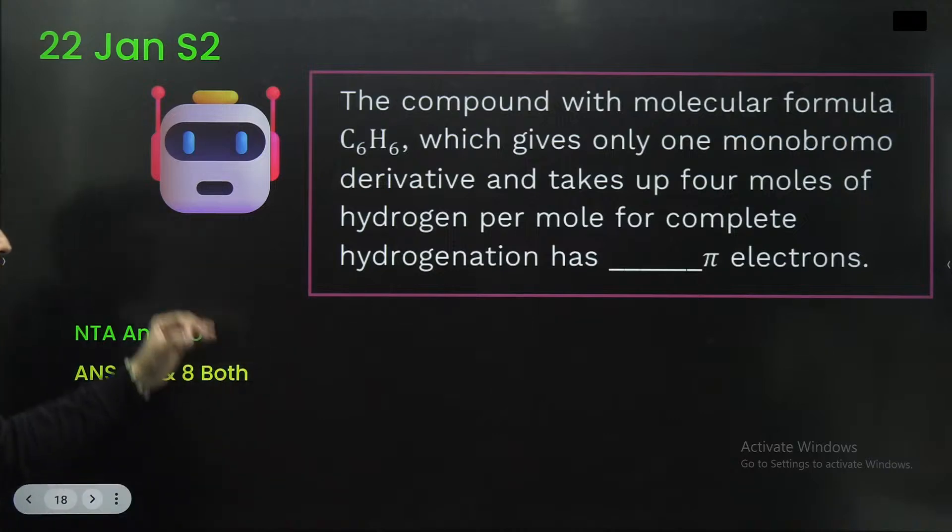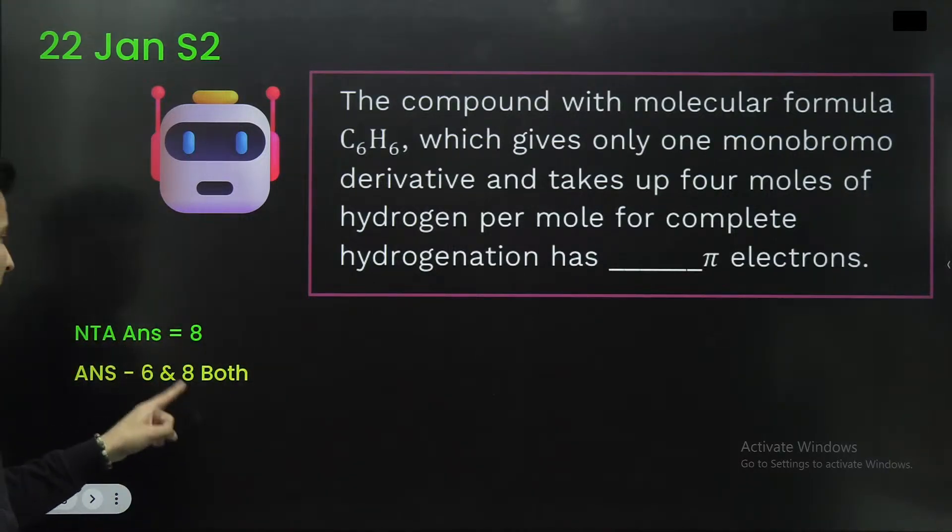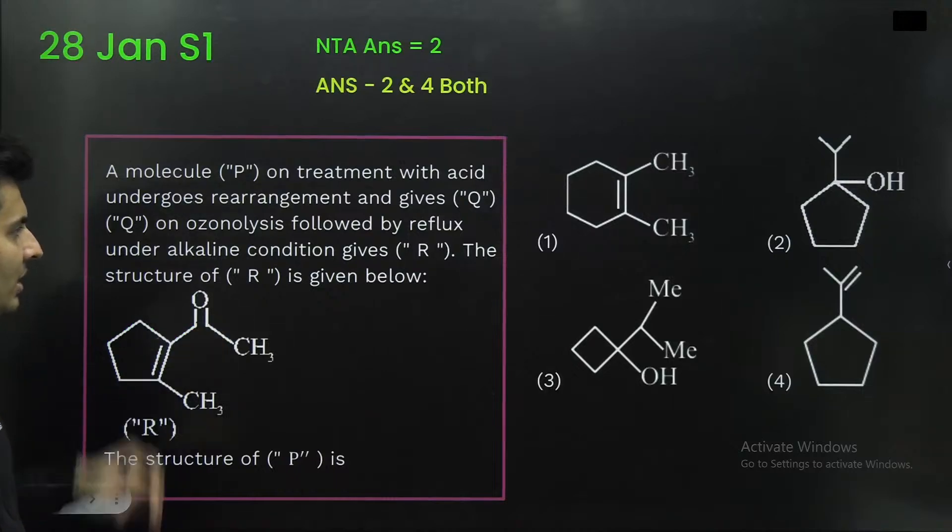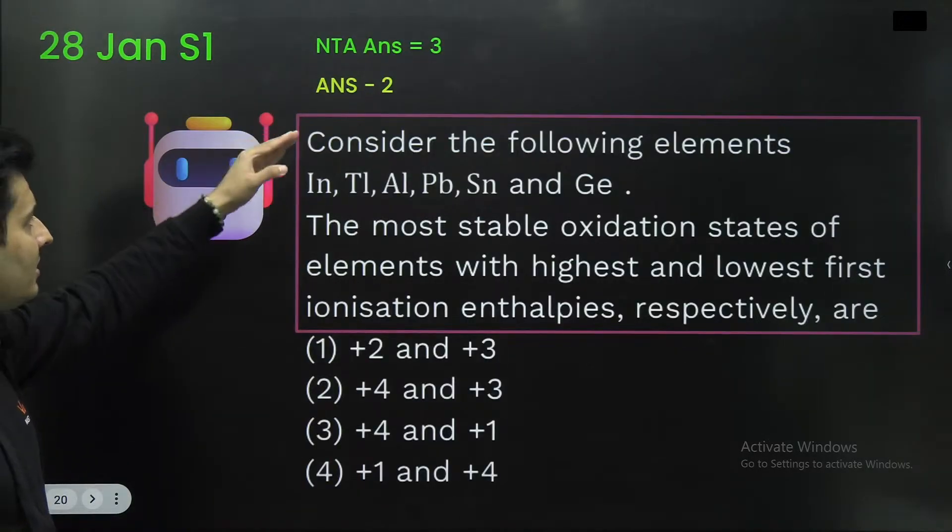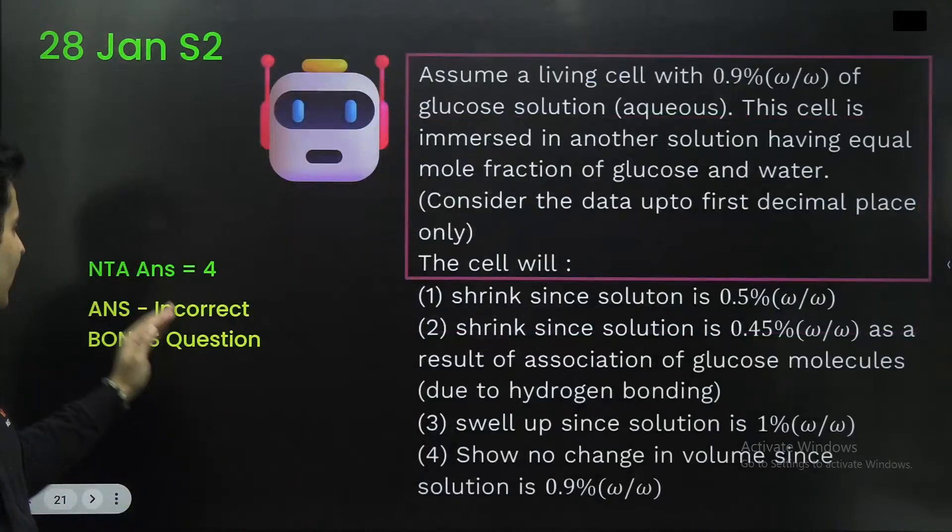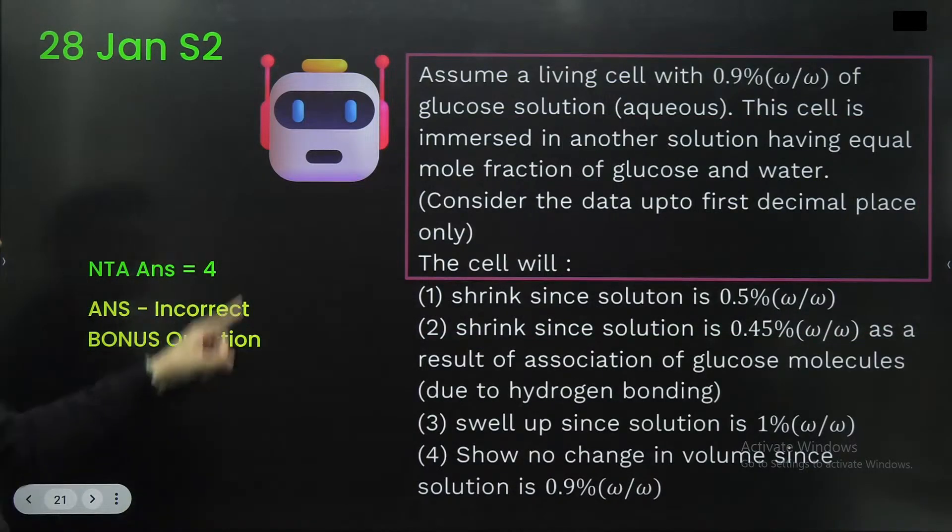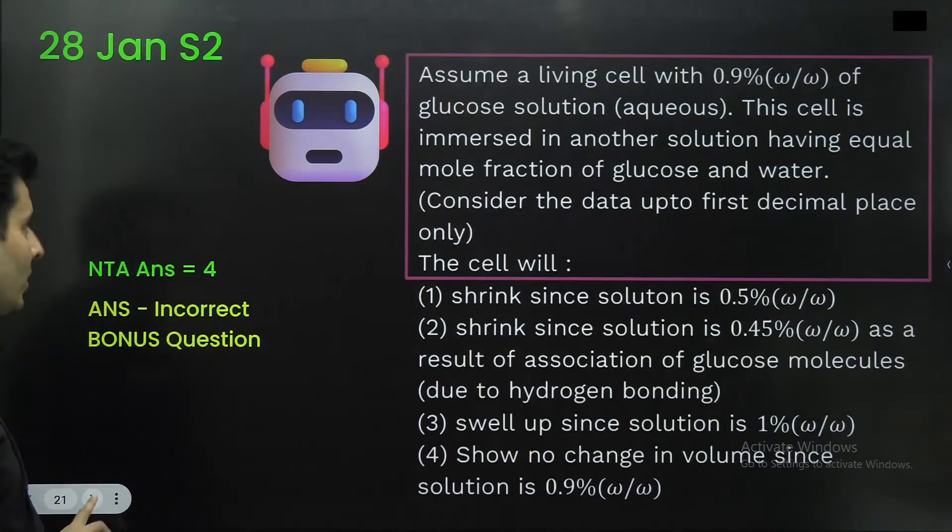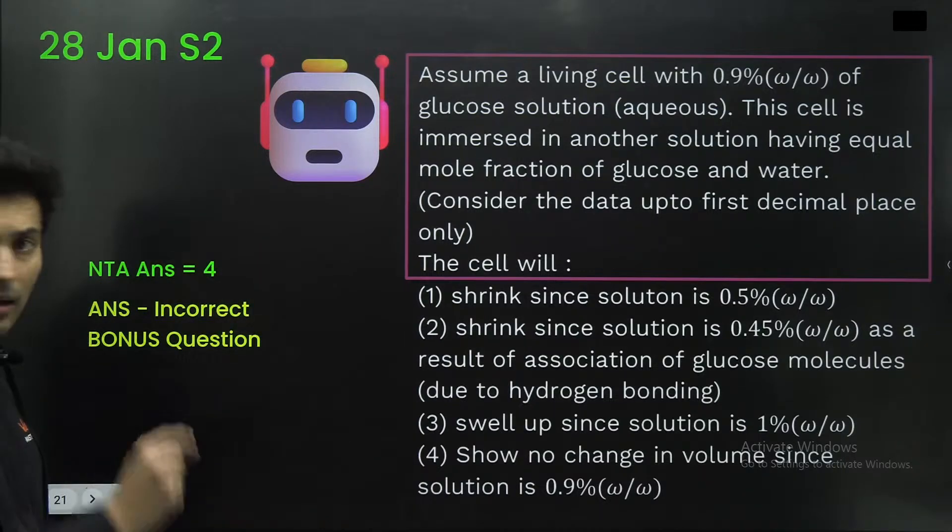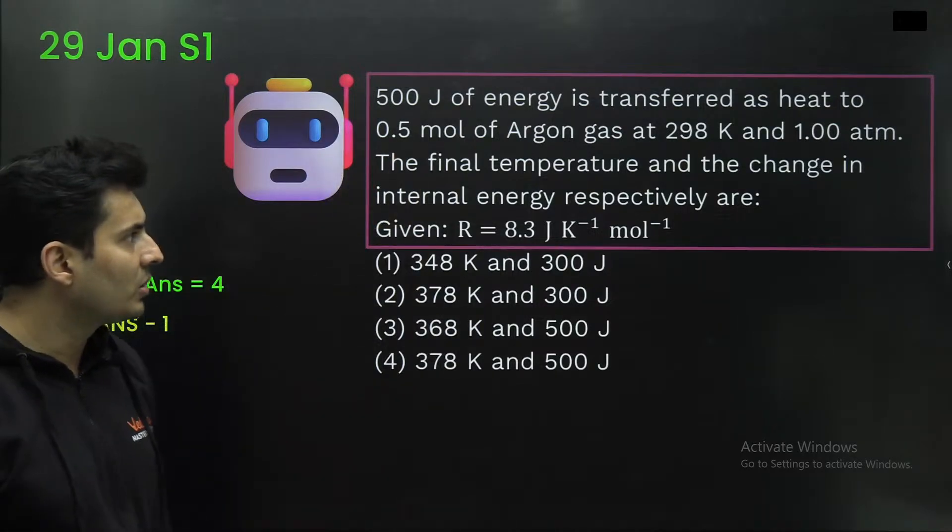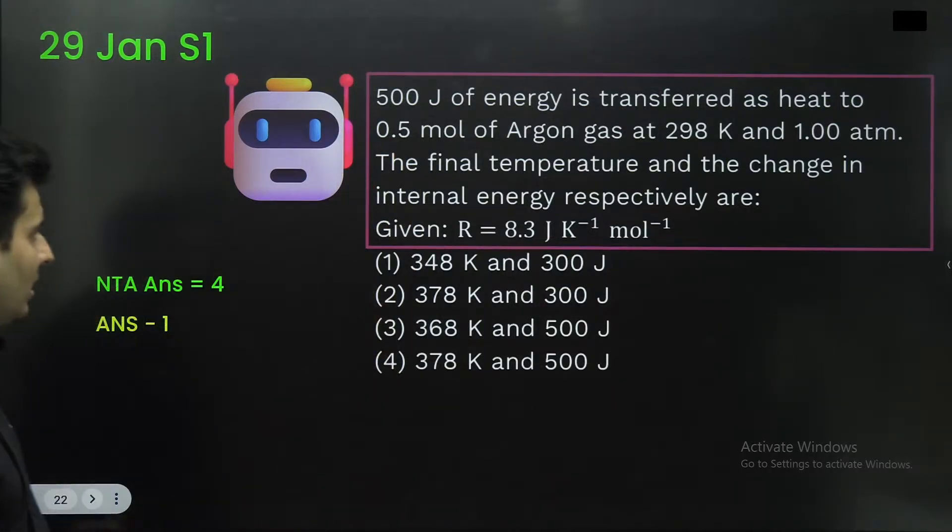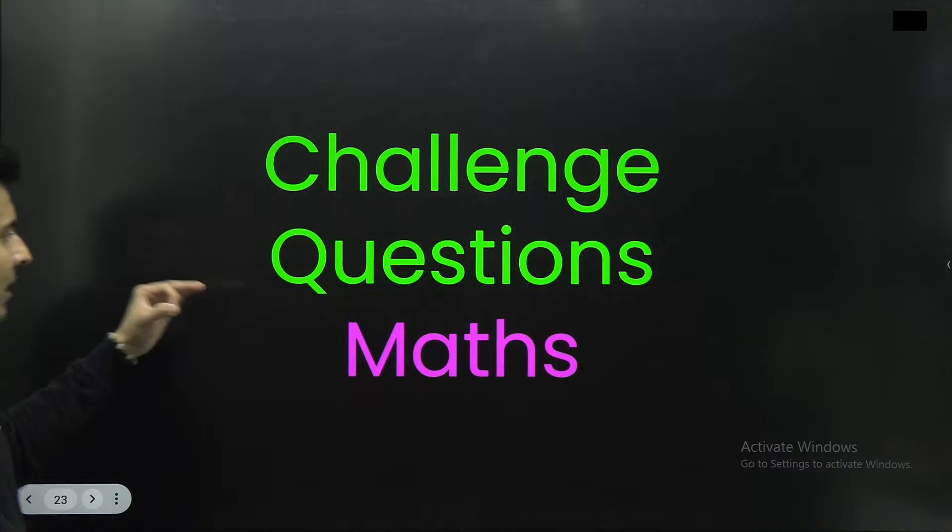This particular question about the moles for complete hydrogenation, NTA's answer is 8, but both answers are possible. Then this particular question in organic chemistry. NTA's answer is 3. Our answer is 2. Then incorrect question, bonus question should be given over here. For this particular one, the living cell related question. Then NTA's answer is 4. And our answer is 1 for this particular question on thermodynamics. Then in mathematics.